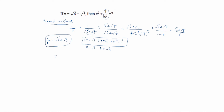Now we solve x plus 1 by x. x is root 6 minus root 5 (already given in the question), and 1 by x is root 6 plus root 5. You see the minus root 5 and plus root 5 cancel. Root 6 plus root 6 gives 2 root 6. So x plus 1 by x is equal to 2 root 6.